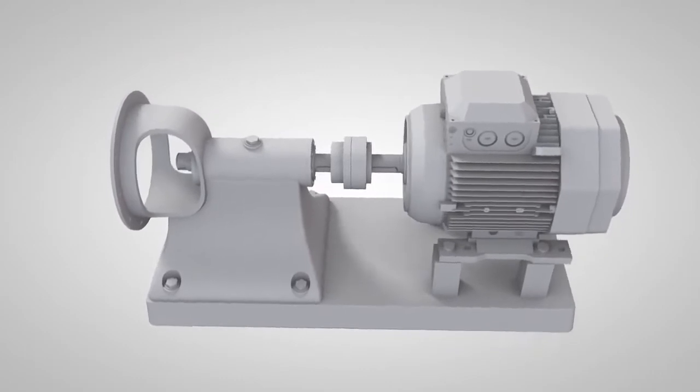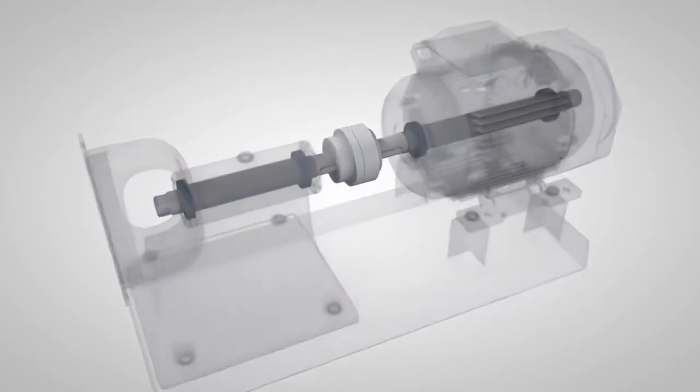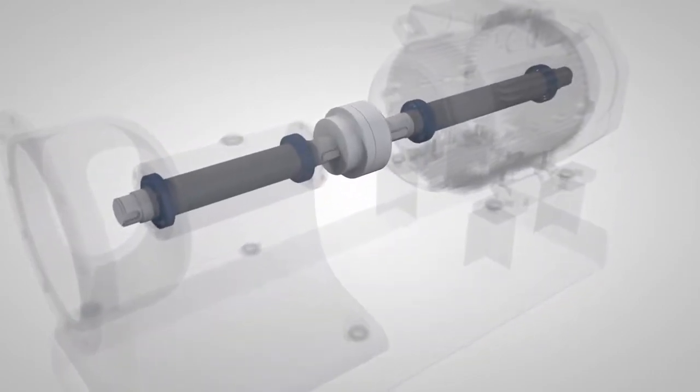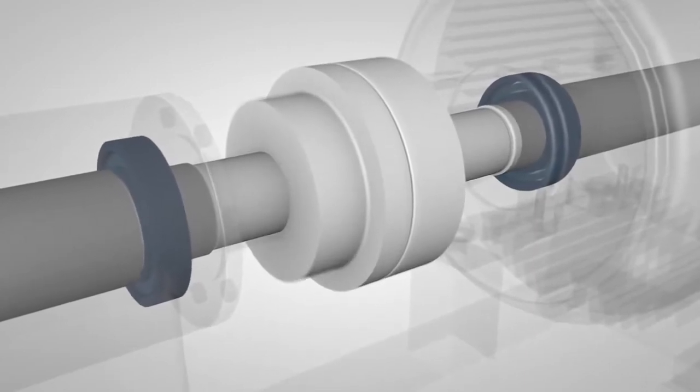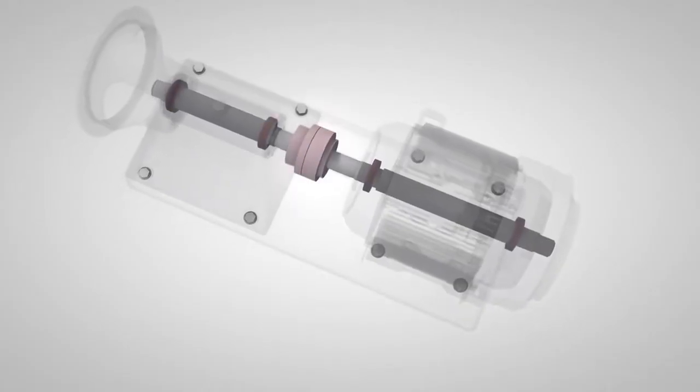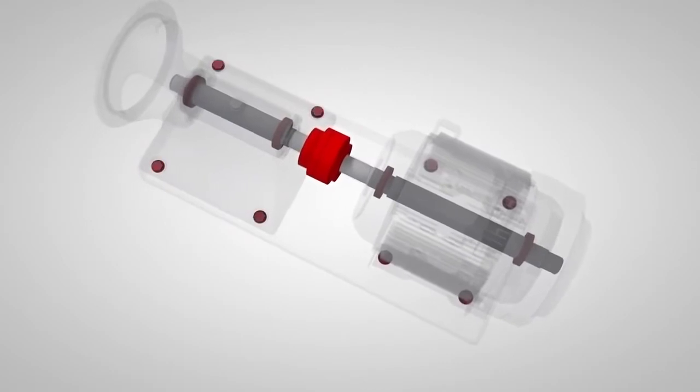Correct shaft alignment is very important for your machines, as misalignment causes vibration and additional forces that damage your machine components, such as bearings, seals, couplings and foundation bolts.